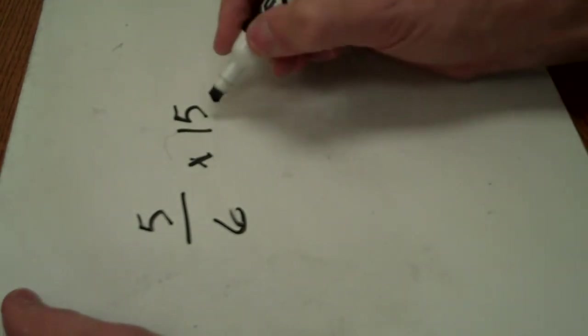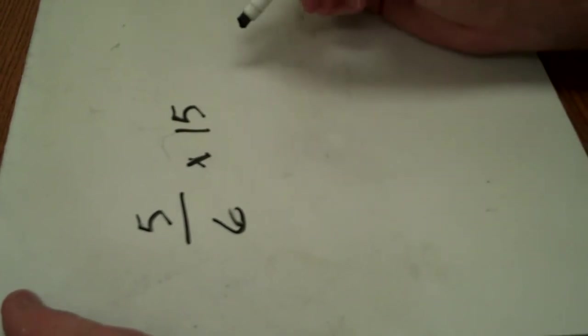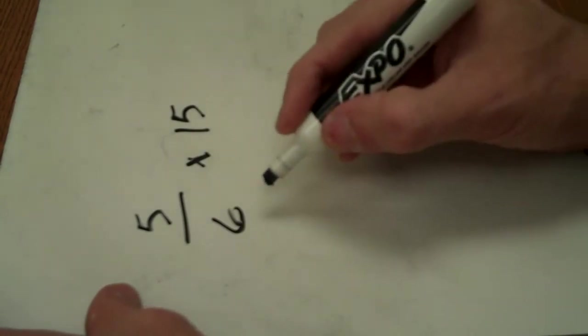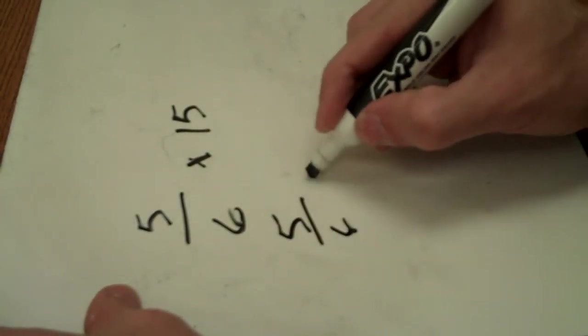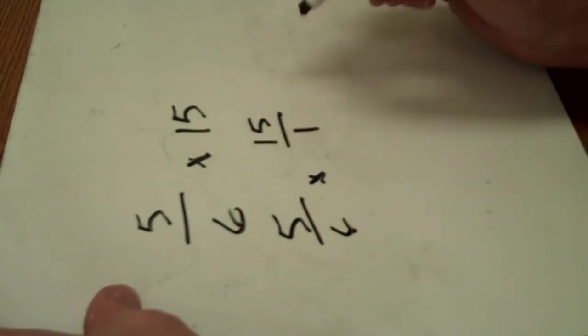Okay, take a look at this. The first thing I need to do is make 15 into a fraction. A whole number, if you're given a whole number, just put it over 1 and then it turns into a fraction. So that's the same thing as saying 5/6 times 15 over 1.